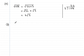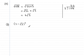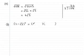In part b we're asked to expand (2 minus root 3) all squared, and give it in the form b plus c root 3, where we have to find the integers b and c. Squaring means we write out two brackets: (2 minus root 3) times (2 minus root 3).